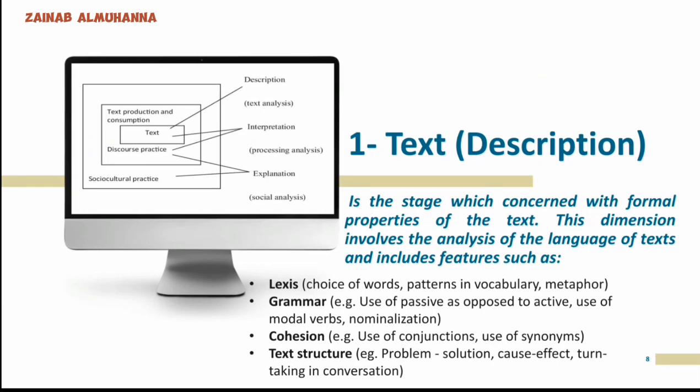Text — we can call it description — is the stage which concerns the formal properties of the text. This dimension involves the analysis of the language of the text and includes features such as lexis, which means choice of words, patterns, vocabulary, metaphor, and grammar — for example, use of modal verbs, nominalization. And also, according to text, we have to deal with cohesion.